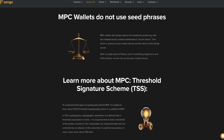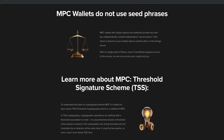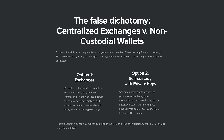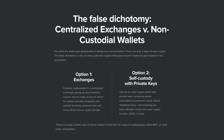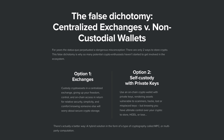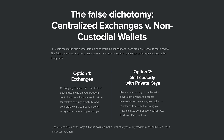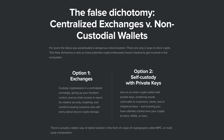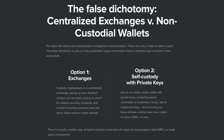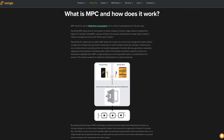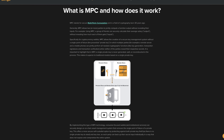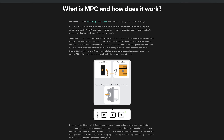Zengo Wallet is a self-custodial crypto wallet that eliminates seed phrase vulnerabilities. Typically, users face the choice between centralized exchanges — giving up their control and on-chain access for relative security — or self-custody with private keys, which carries the risk of key loss or theft. Zengo offers the best of both worlds by leveraging advanced cryptography known as MPC, multi-party computation.